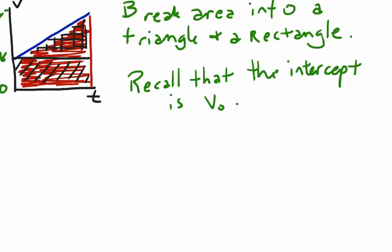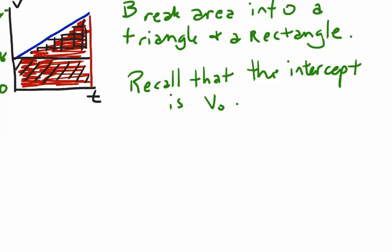The intercept is v-naught, and the highest point on the graph is our final velocity. The rectangle has an area of base times height — v-naught is the height and the time is the base — so the area of that rectangle is v-naught times t.